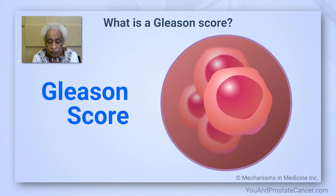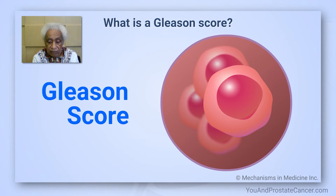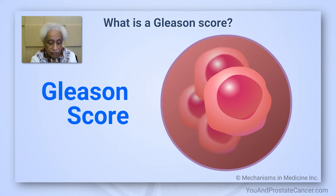Grades two, three, and four fall in between. These numbers give us a good idea of how aggressively the cancer will behave. The higher the number, the more aggressive the cancer.